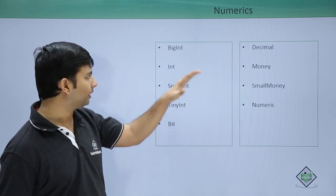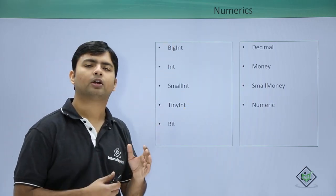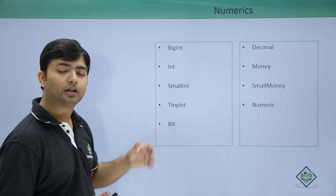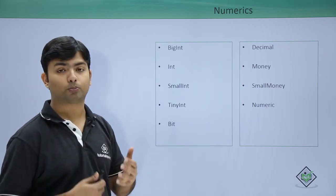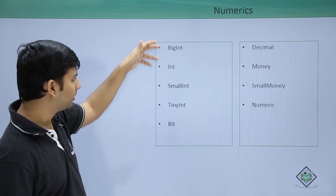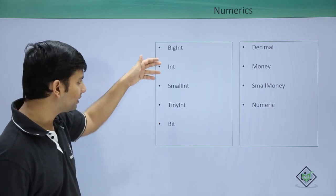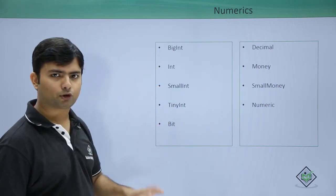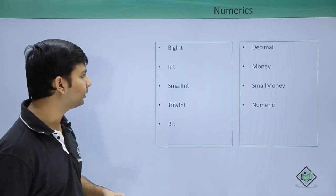Let's begin with the numerics. For integers, if you want non-decimal numbers, you can go for the integer type. Depending on what type or how big the number is, you can choose accordingly from the options available: bigint, int, smallint, tinyint, and bit for ones and zeros — that is true or false — which can be converted as well.